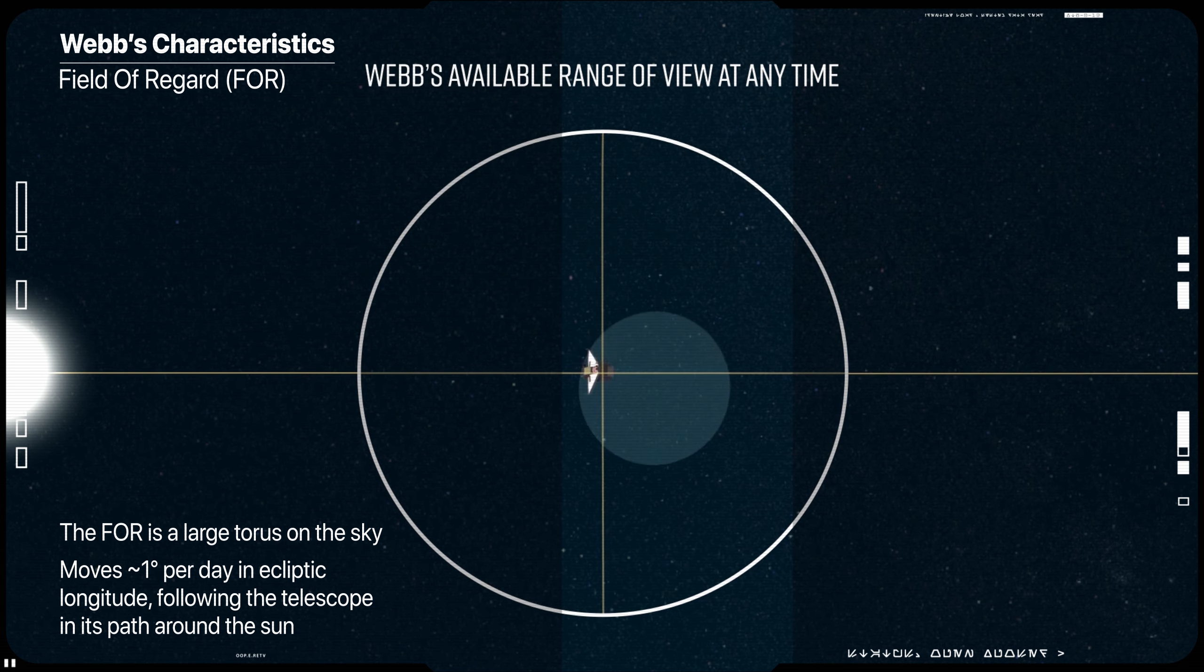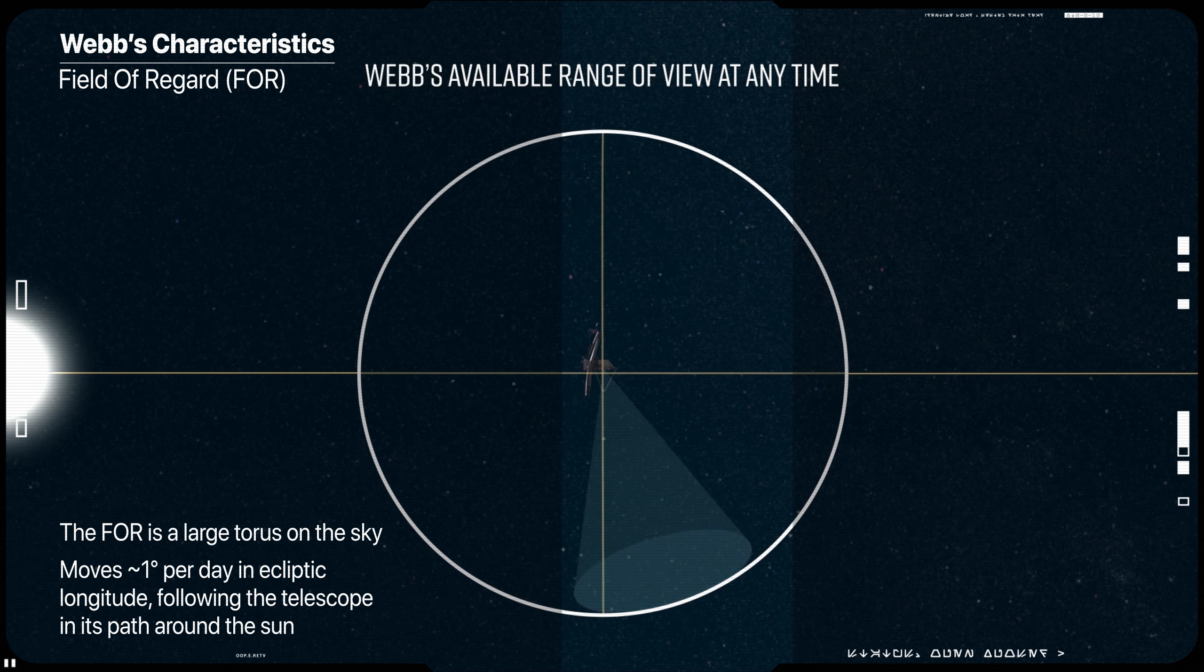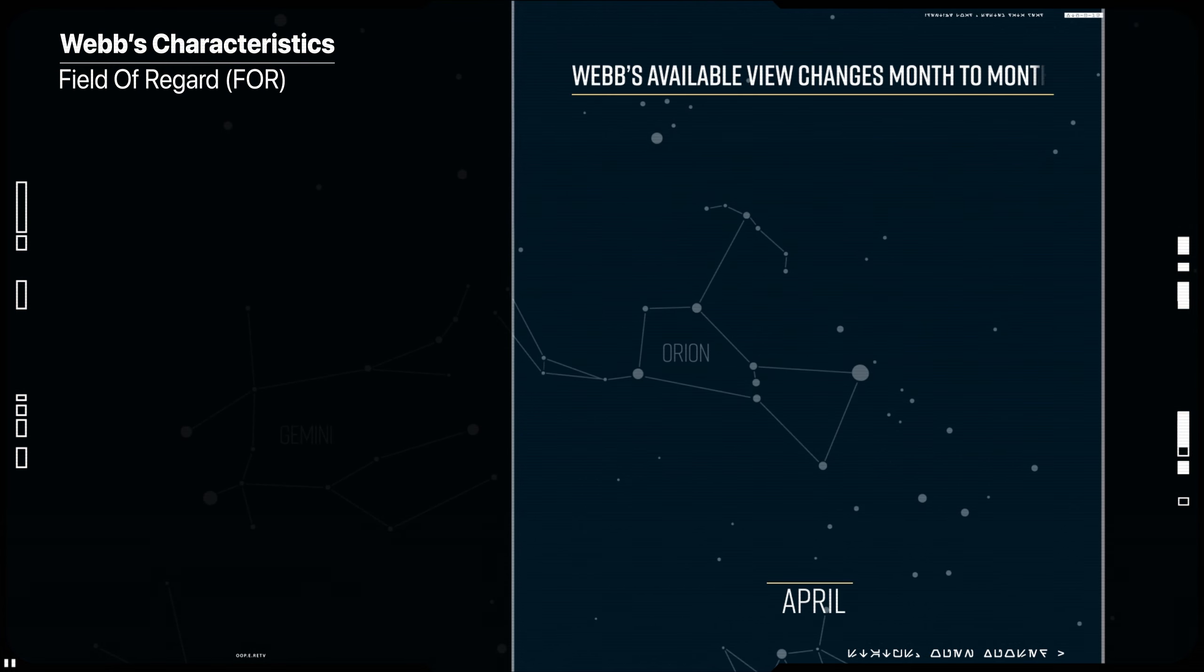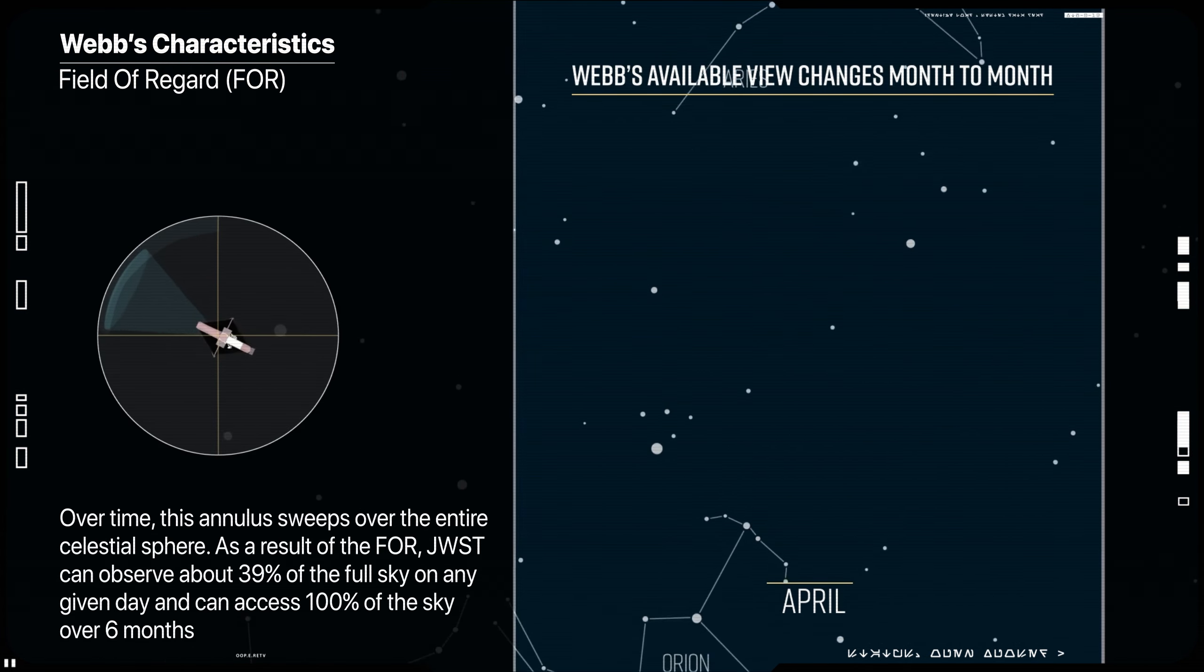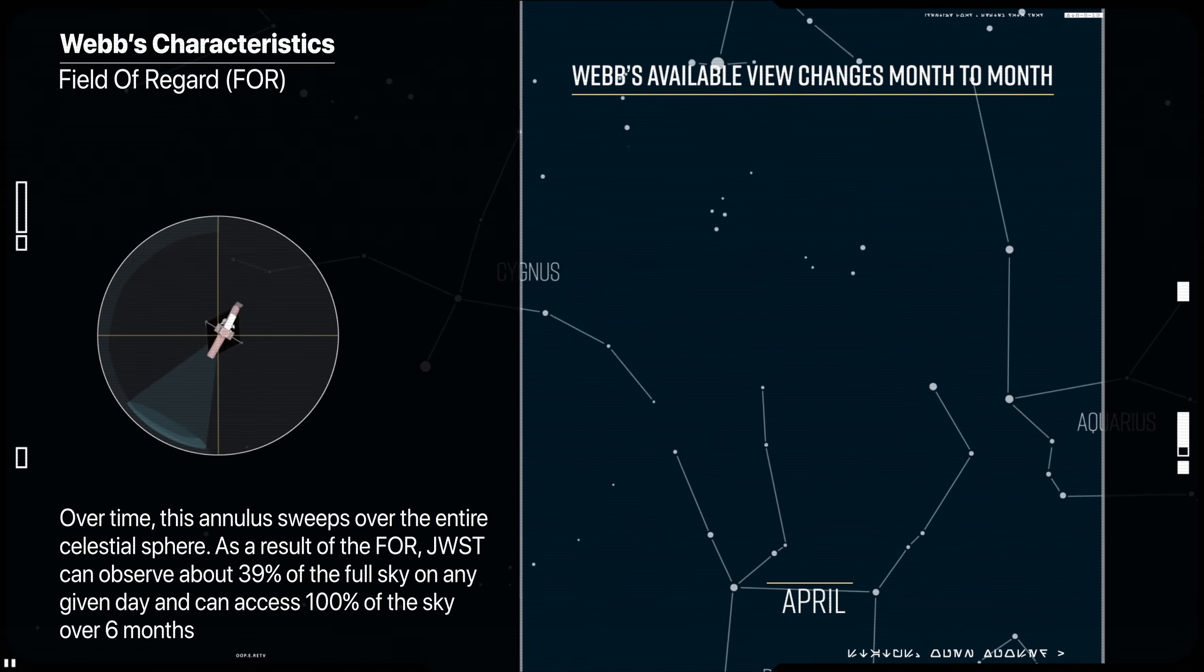Over time, this annulus sweeps over the entire celestial sphere. As a result of the FOR, James Webb can observe about 39% of the full sky on any given day and can access 100% of the sky over 6 months.